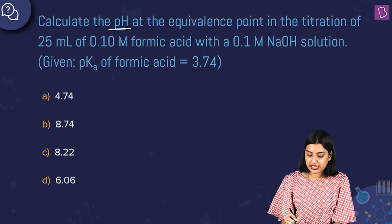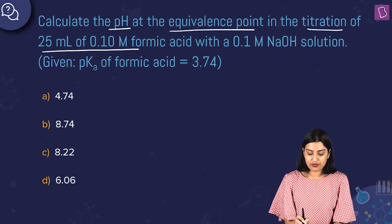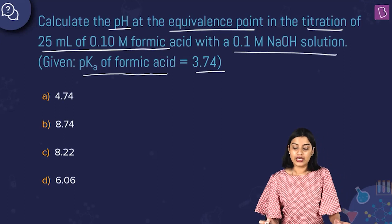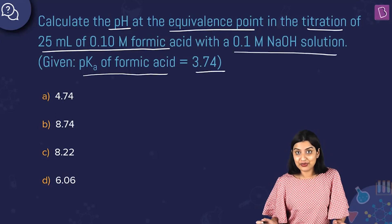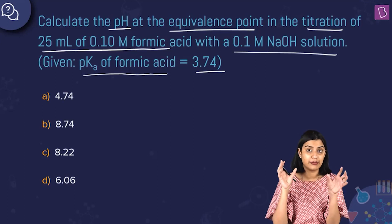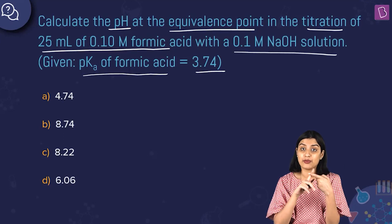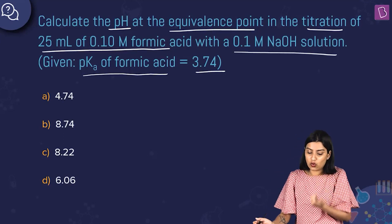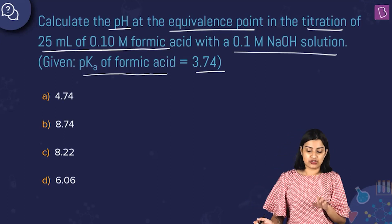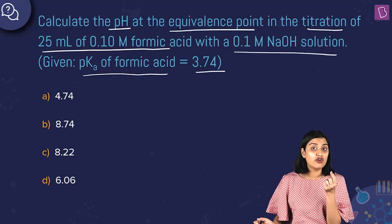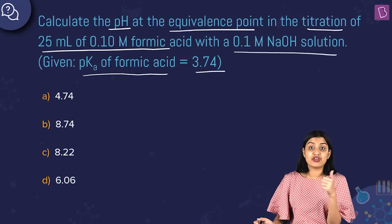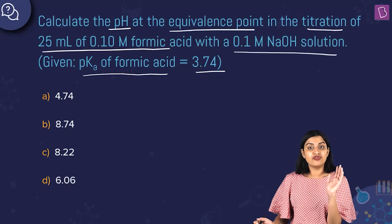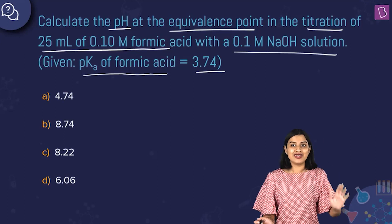Calculate the pH at the equivalence point in the titration of 25 ml of 0.1 molar formic acid with a 0.1 molar sodium hydroxide solution, given pKa of formic acid is 3.74. At the equivalence point, the number of equivalents of formic acid equals the number of equivalents of sodium hydroxide. First, find the volume of NaOH used, then find the number of equivalents of salt formed, find the concentration, and apply the salt hydrolysis formula to find pH.